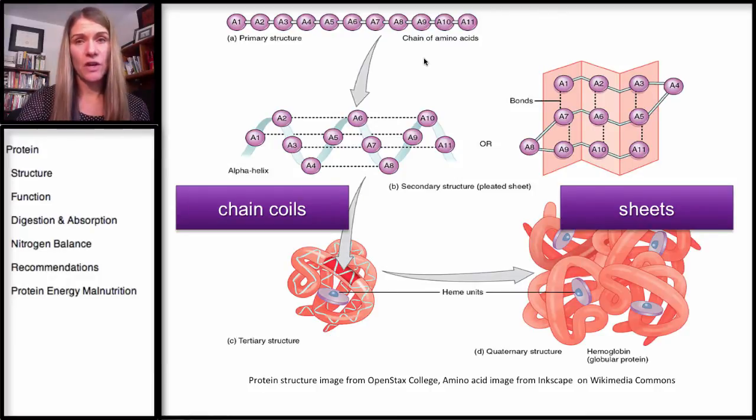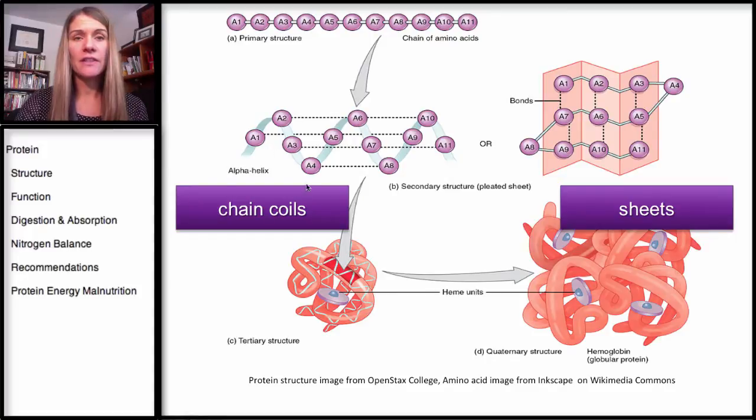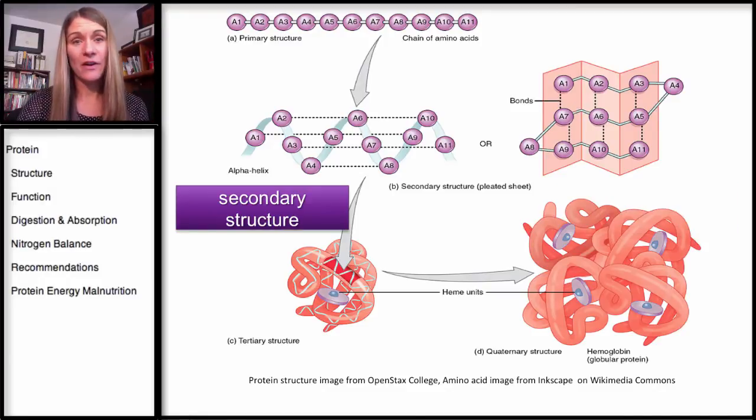Now, the secondary structure, and we can see two different types of structures, is either one, this is a coil. If you can think of something coiling around, the amino acids are then bonded together in this coil. Or they become sheets, so that they're pleated like this. And that's the secondary structure.